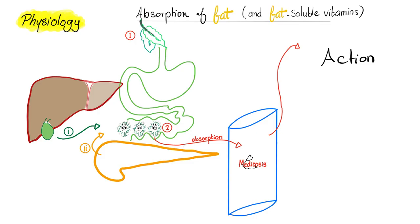If those three organs are intact, you will be able to absorb fat and fat-soluble vitamins. But if there is a problem in the liver and biliary system, or the pancreas, or the gut, you will suffer from fat malabsorption. Not only fat will end up in the stool, but fat-soluble vitamins will too, resulting in deficiency of vitamins K, E, D, and A.